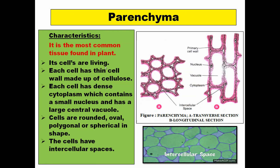Parenchyma is the most common type. You can see these structures — parenchyma cells throughout the plant body, whether stem, root, or leaf. Their cell wall is made up of cellulose. The cytoplasm is quite dense, and you can observe the vacuoles as white structures inside. A small peripheral nucleus can also be recognized. The cells can be rounded, oval, polygonal, or spherical in shape. One important feature is the presence of lots of intercellular spaces — the gaps between adjacent cells visible as white portions outside the cells.